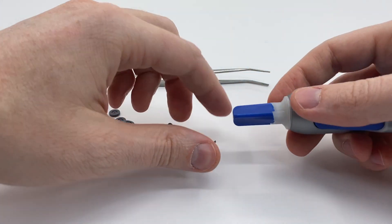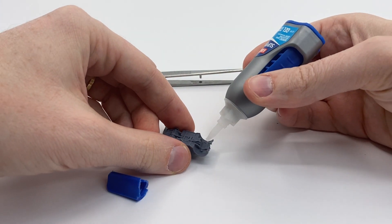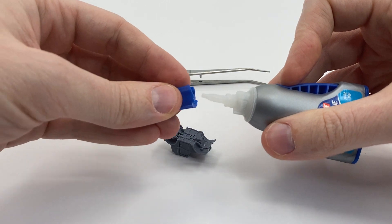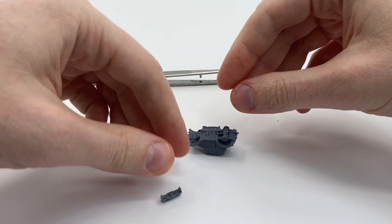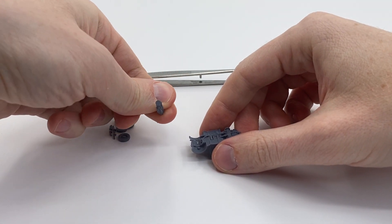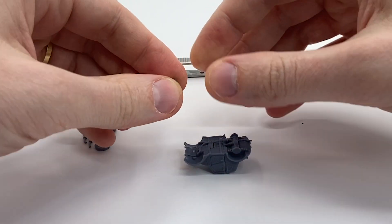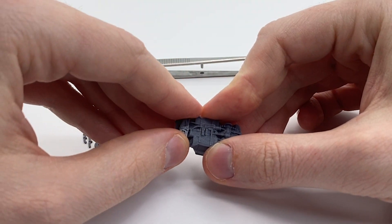For that, all we have to do is just put a tiny bit of glue. Just like that. A tiny bit of glue. Just to double check again, make sure that our angle is correct. There you go.